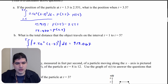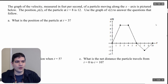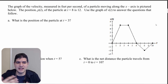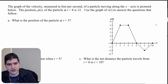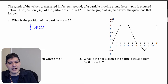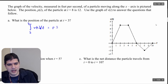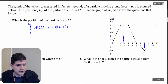Let's move on to our second question. The graph of the velocity is measured in feet per second, so we have units in this one. We know the position at t equals 8, and we want to use the graph to answer some questions. The first question is: what is the position of the particle at t equals 3? I'll integrate v(t) dt from 3 to 8, since I know the position at t equals 8. This gives me p(8) minus p(3).